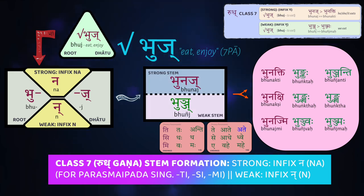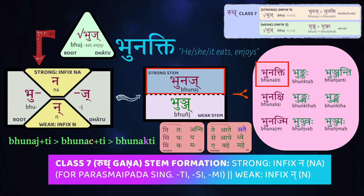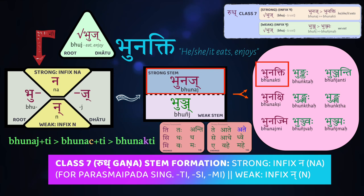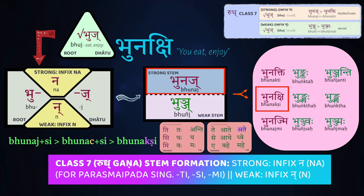Because both of these stems end in consonants, we're going to have some tricky sandhi issues when conjugating the seventh class. In the parasmaipada singulars, we use the strong stem bhuñaj. When you add ti, sandhi occurs: the takāra is unvoiced, so the j loses its voicing and becomes cha — bhuñaj. But palatals are unstable and it jumps up to a velar, giving the form bhuñakti, meaning he/she/it eats or enjoys. Bhuñaj plus si does the same: it becomes bhuñak, and then the sibilant retroflexes, giving us bhuñakṣi — you eat, you enjoy.